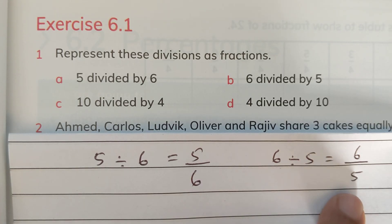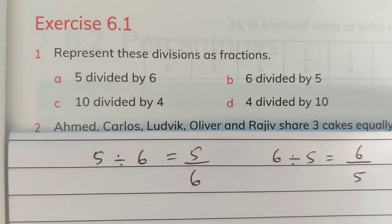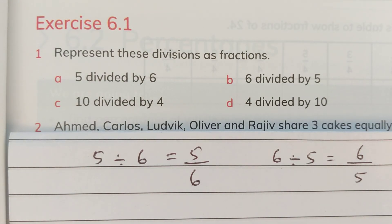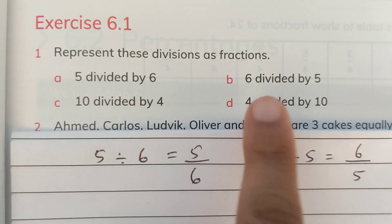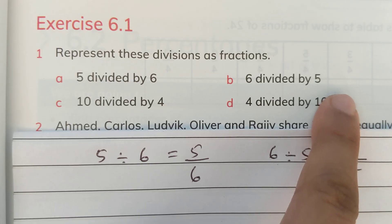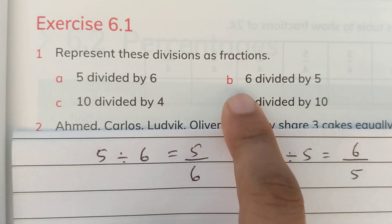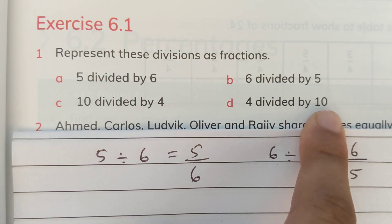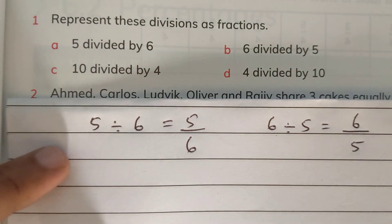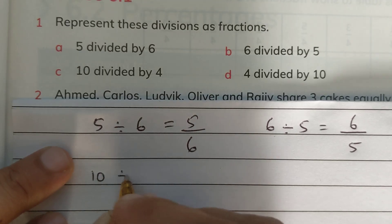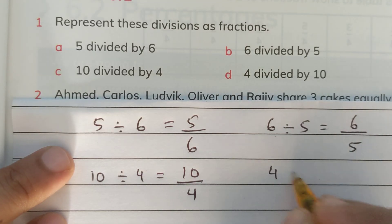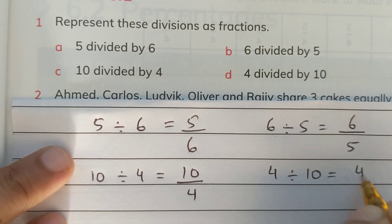When the numerator is greater than the denominator, the fraction is called an improper fraction, expressing an amount greater than one whole. For example, I have six chocolates to be shared among five children, so each child will get more than one chocolate — at least one and some part of another. Then we have 10 divided by 4, which equals 10 upon 4, and 4 divided by 10 equals 4 upon 10.